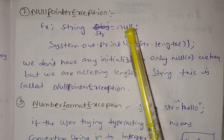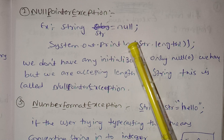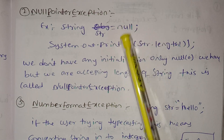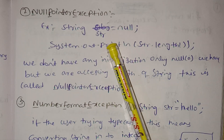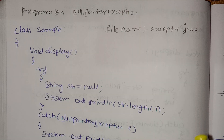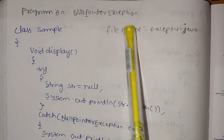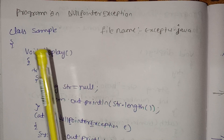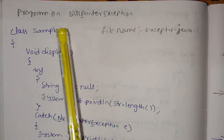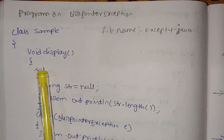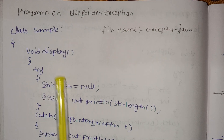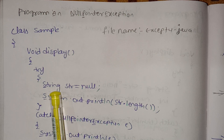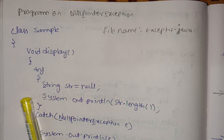We have a count here: 0, 1, 2, 3. The null value is not zero, so you can calculate. Here is the NullPointerException — that is correct. Now we have the program. We are accessing the file, adding a class, and using the display method. This is the type of try block, and next we have to write code inside the try block.